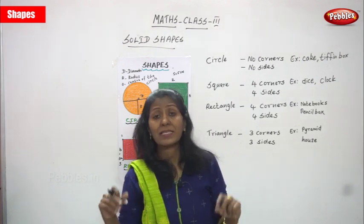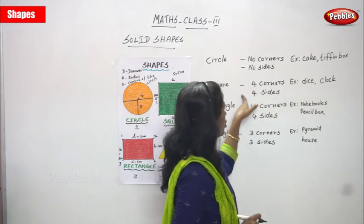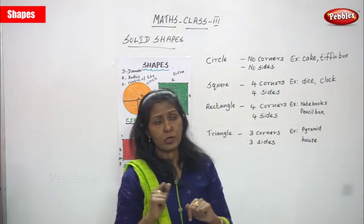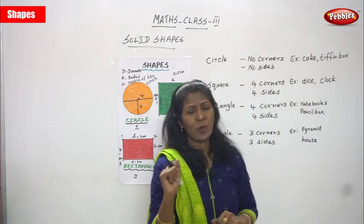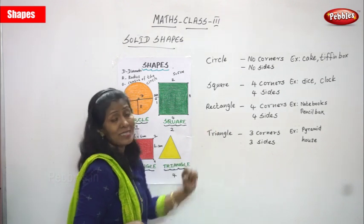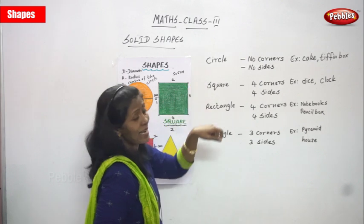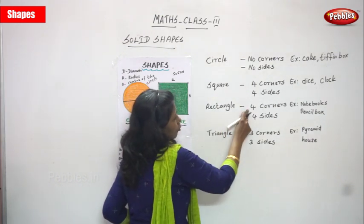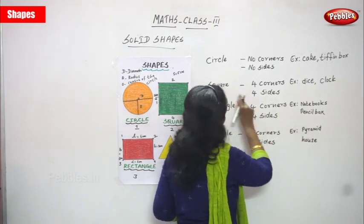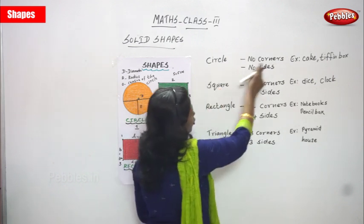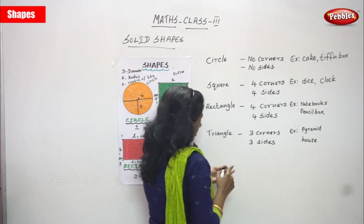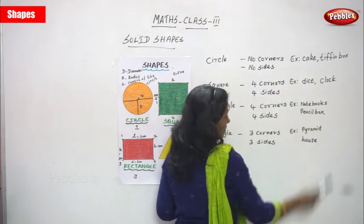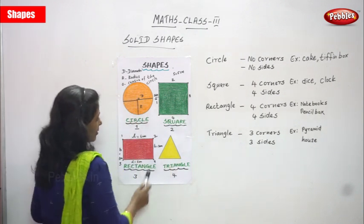Examples of square are dice and clock. Examples of rectangle are notebooks and pencil box. Circle's example is cake and round tiffin box. Now we are going to the last diagram — triangle.